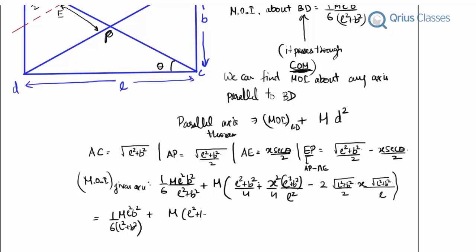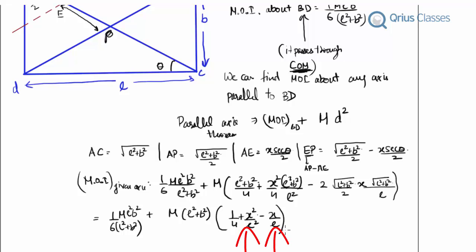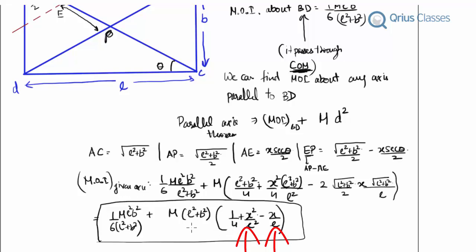Taking (L²+B²) common, we are left on the inside with 1/4 + X²/L² − X/L, keeping in mind the factor of 1/4 with X²/L² and a factor of 1/2 with X/L. This gives the final moment of inertia of the rectangular plate.